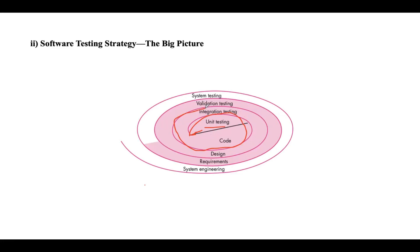Testing progresses by moving forward along the spiral to integration testing. The focus is completely on design, so corresponding to integration testing there is design. In integration testing, focus is on the design part and construction of the software architecture. Moving inward, you reach validation testing, where the requirements established as part of requirements modeling are validated.